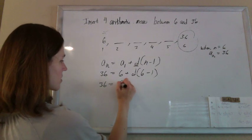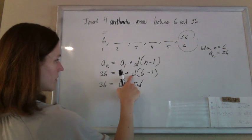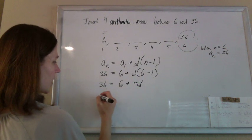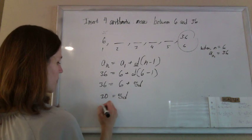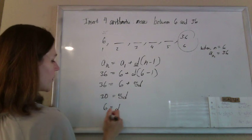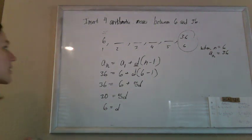So 36 equals 6 plus, 6 minus 1 is 5, so 5d. Subtract the 6, so 30 equals 5d. Divide by 5, d equals 6. So the common difference is 6, meaning we're adding 6 every time.